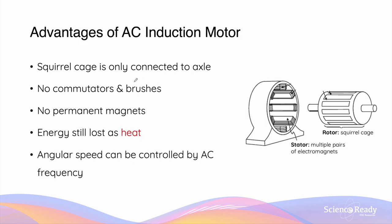The advantages of AC induction motors are as follows. Since the squirrel cage is the only component connected to the axle, there are no commutators and brushes inside an induction motor. An induction motor also uses electromagnets rather than permanent magnets. Energy — that is, electrical energy — is still lost as heat as current flows through the rotor bars. The angular speed of the rotor can also be easily controlled by the AC frequency, that is the frequency at which the current is switching its direction.